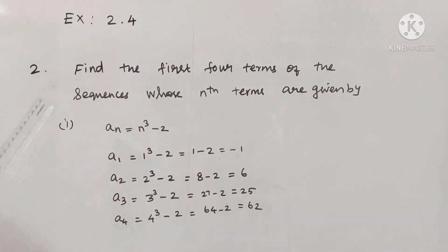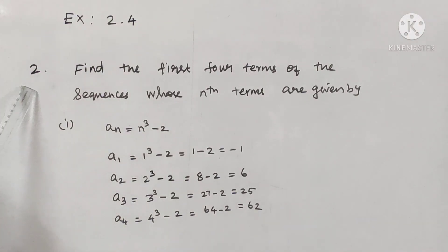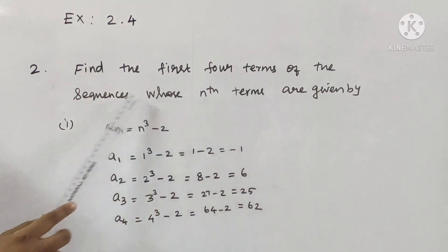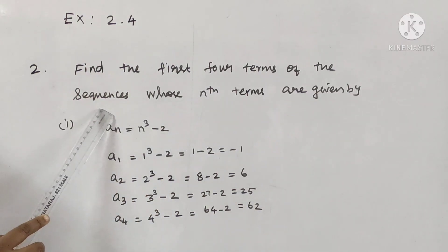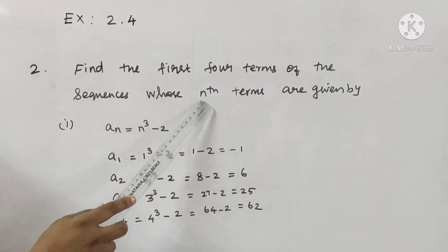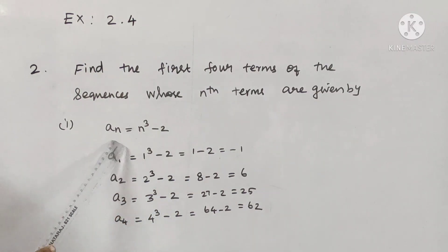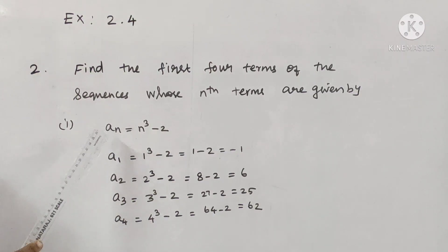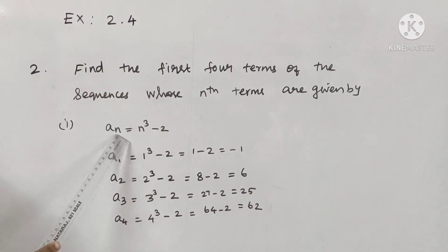Friends, in this video we will find the first four terms of the sequences. That is the nth term — this is the general term. So in this sequence there is a general form, and in these 4 terms we can substitute n equal to 1, 2, 3, 4.